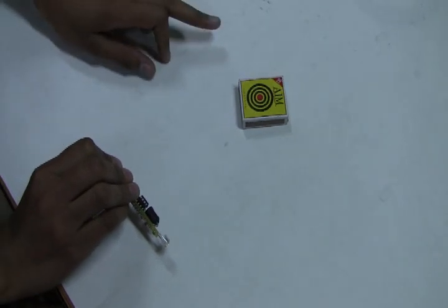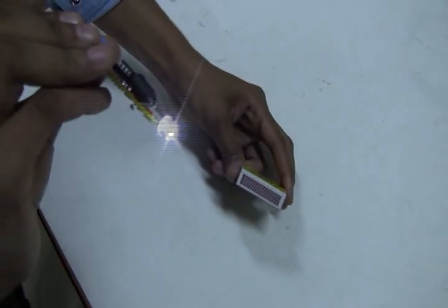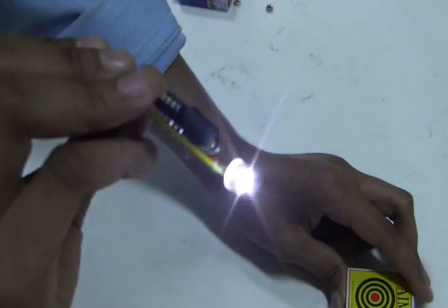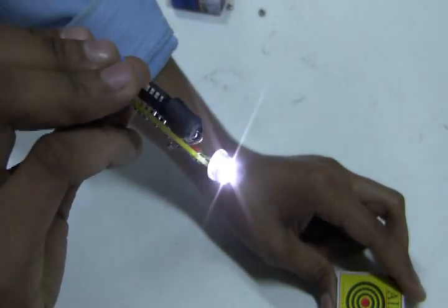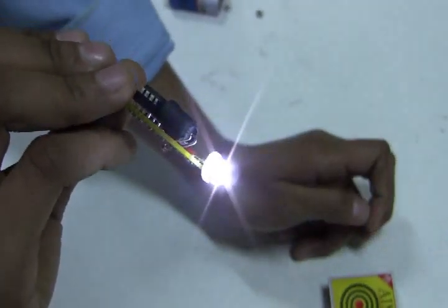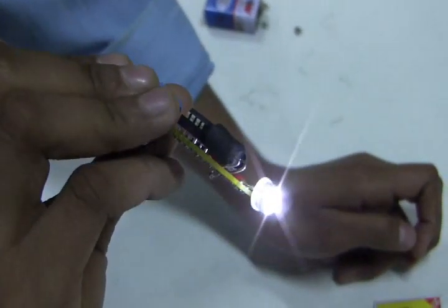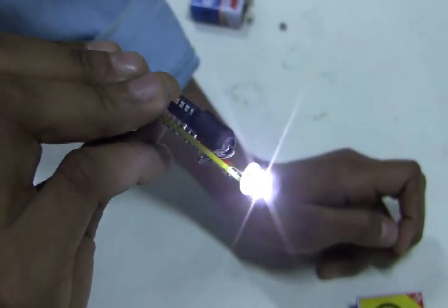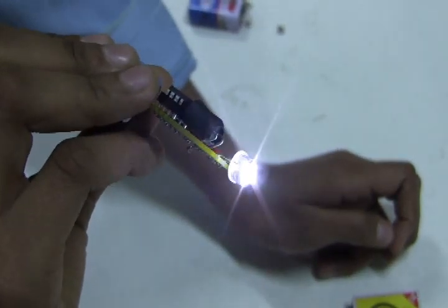To light the matchstick, you simply strike it against the specially designed matchbox, and then you see the matchstick going like a normal matchstick. It will remain lit for a few seconds, just like a normal matchstick would.